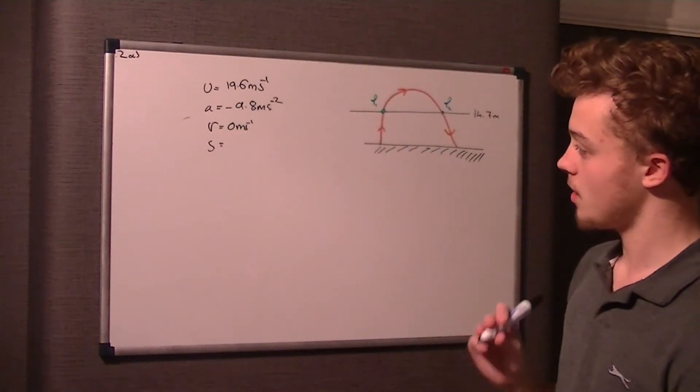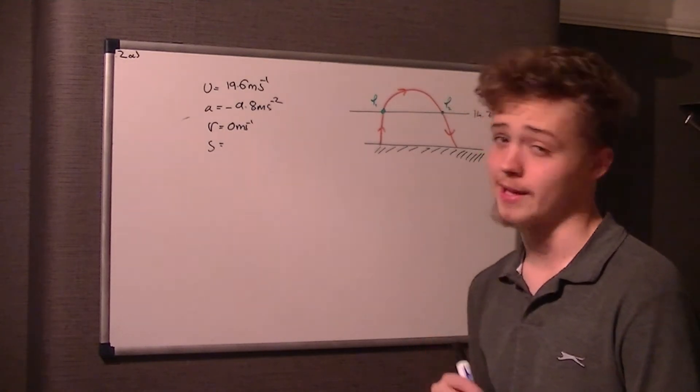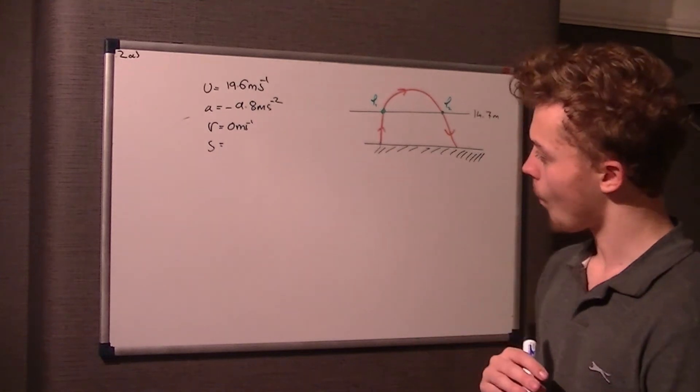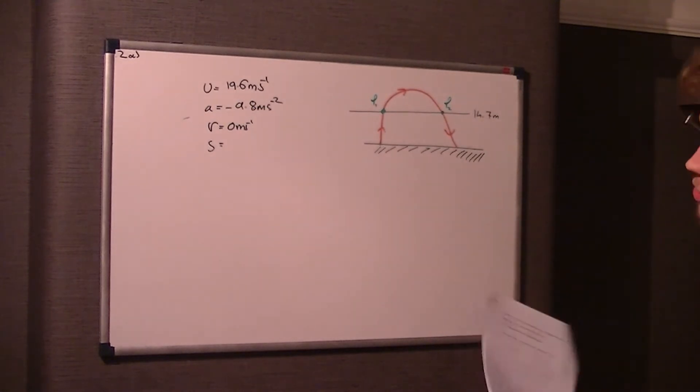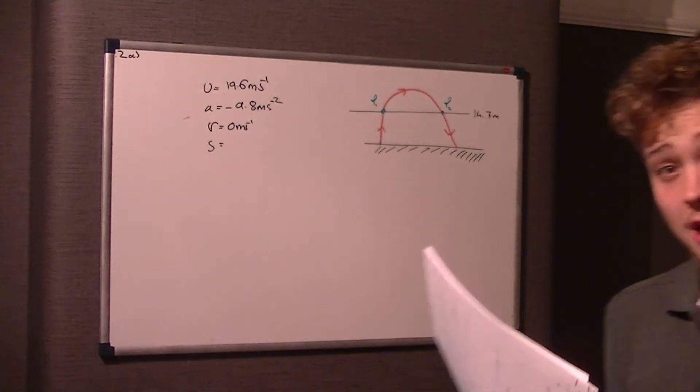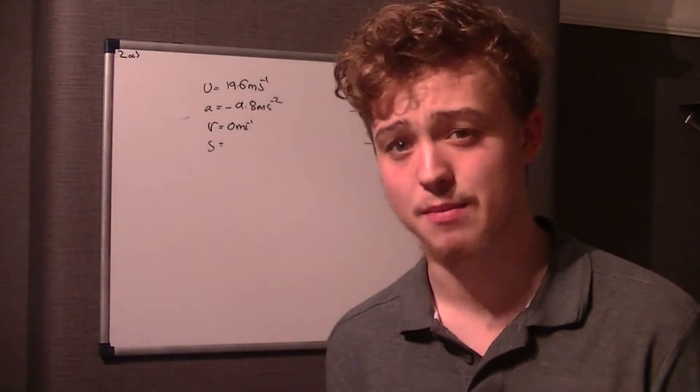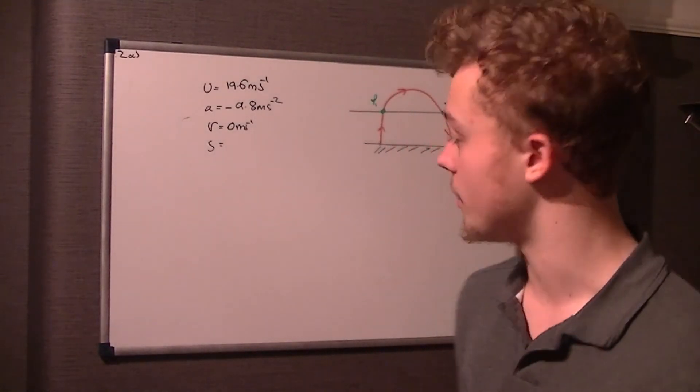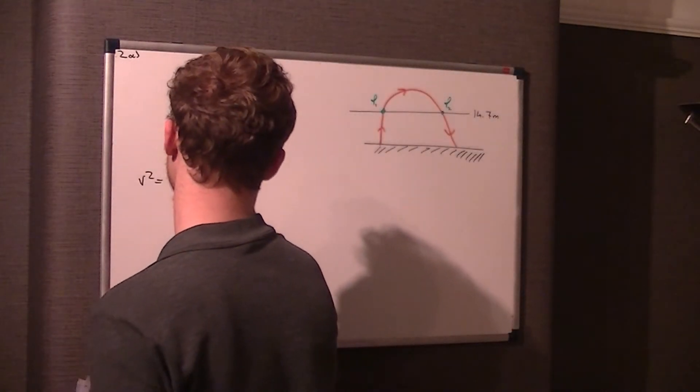We've got V, U, A, and S. We want to know the distance. What equation would involve V, U, A, and S? Well, it'd be V equals U plus AT, but we don't know what T is and we're not bothered about T. You could do V equals U plus AT, work out what T is, and then use that value in S equals half of U plus V times T to get the distance. But a much more simple way of doing it is using the equation V squared equals U squared plus 2AS.